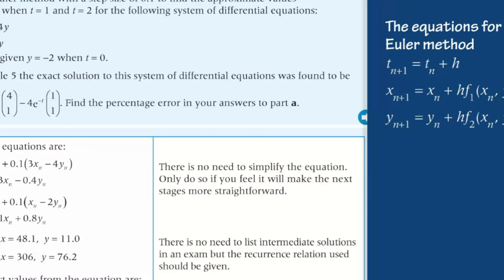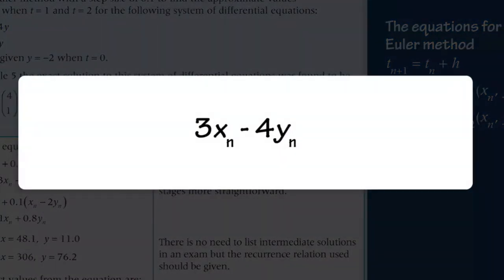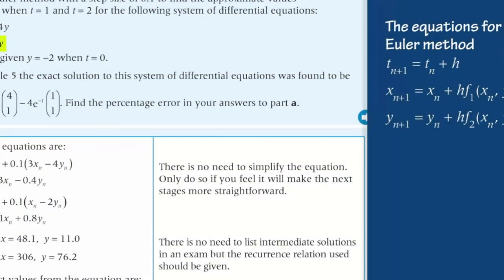In this case, f1 is 3x minus 4y, which will become 3xn minus 4yn, and f2 is x minus 2y, which becomes xn minus 2yn.